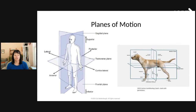First, we're going to talk about some differences in the terminology between human and veterinary medicine. In humans, we have anterior, which is to our front side, and posterior, to our back side. In dogs, because they're quadrupeds, it's ventral — their belly side or the side towards the floor — and dorsal is their back side or the side up towards the sky.